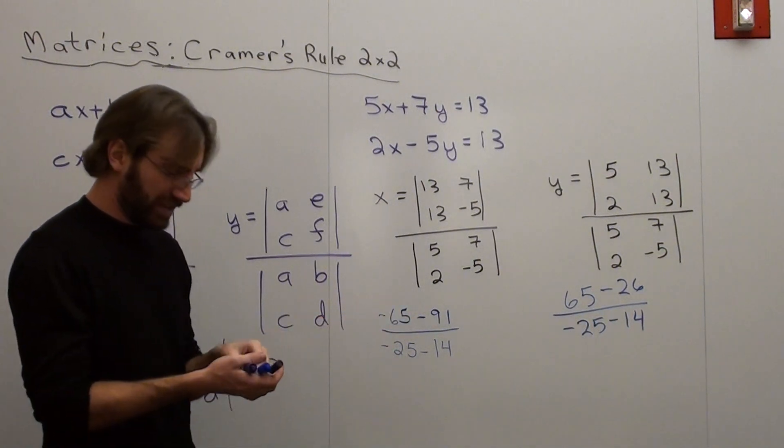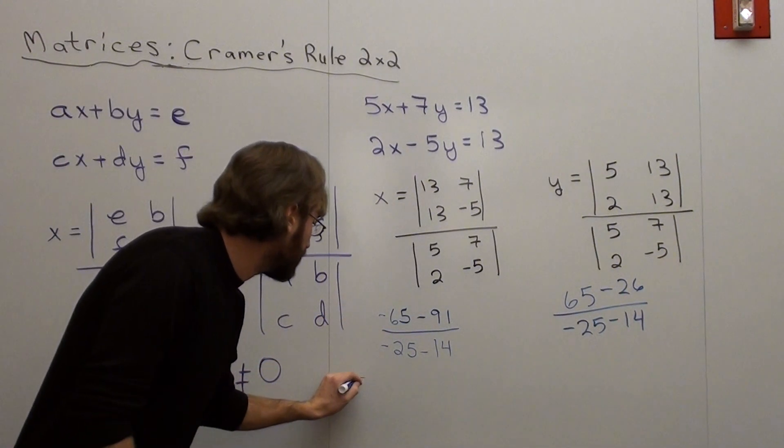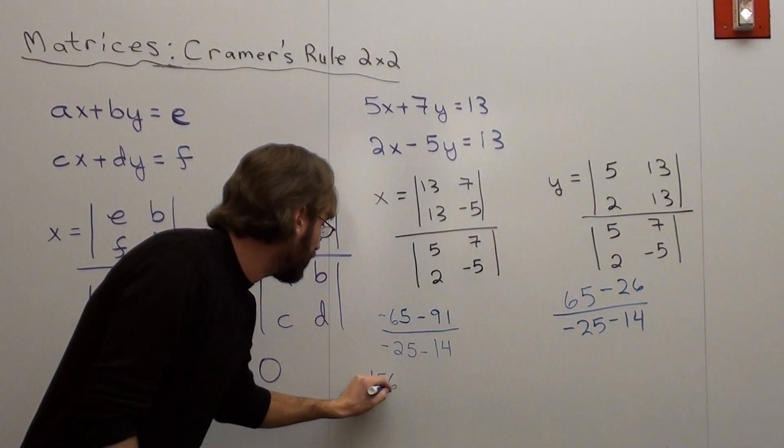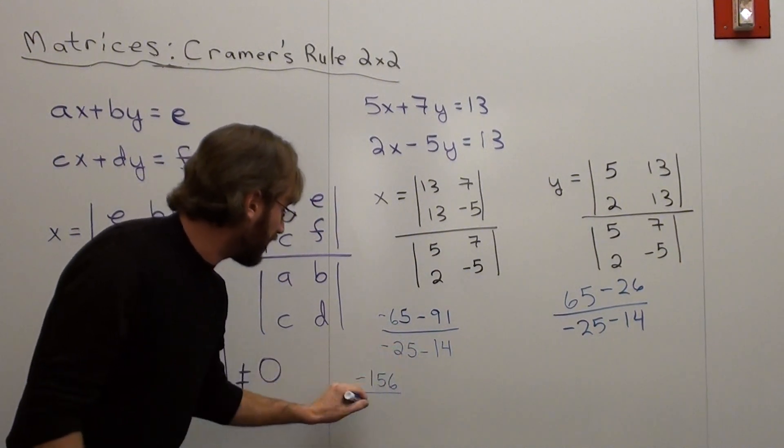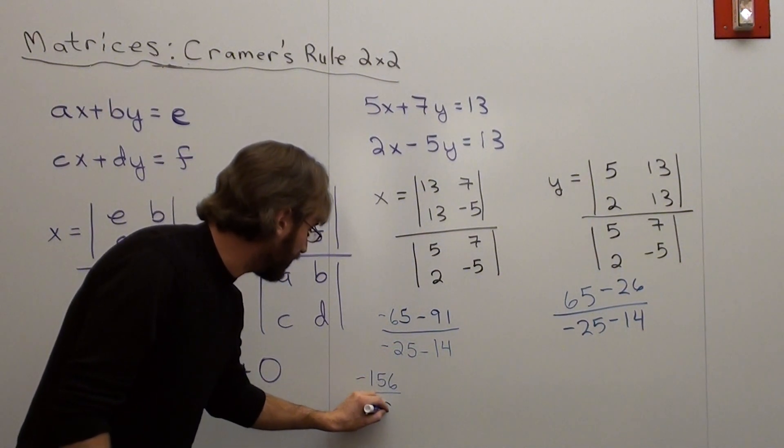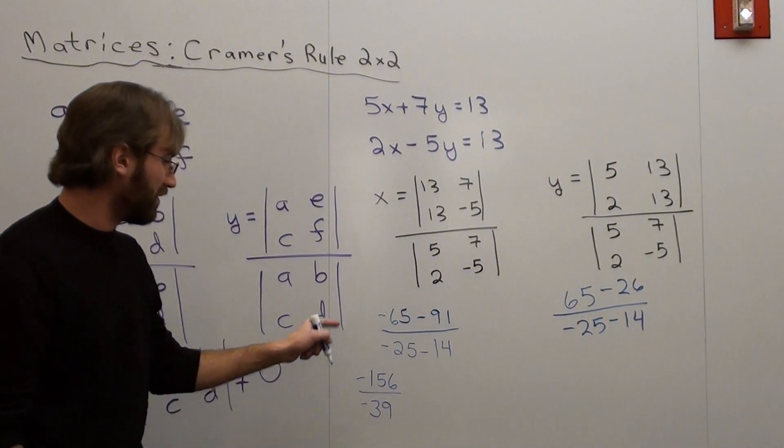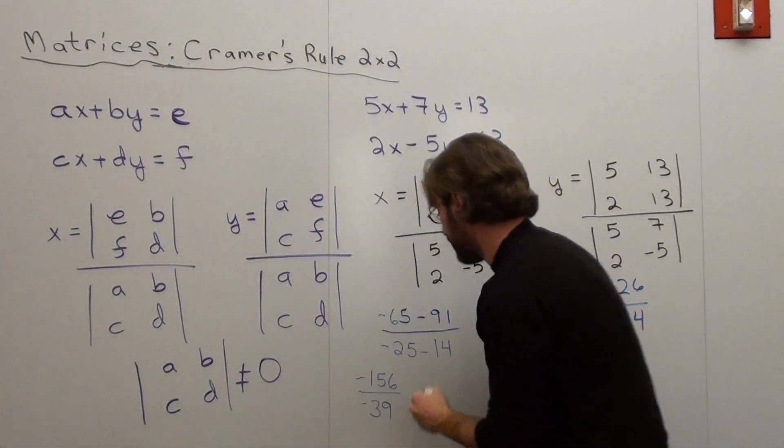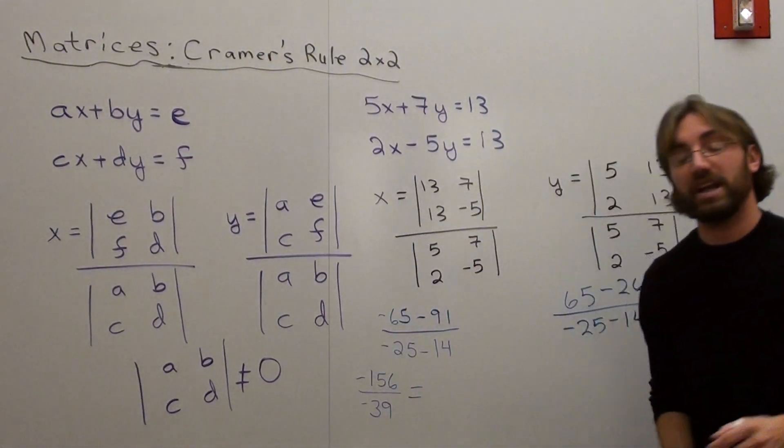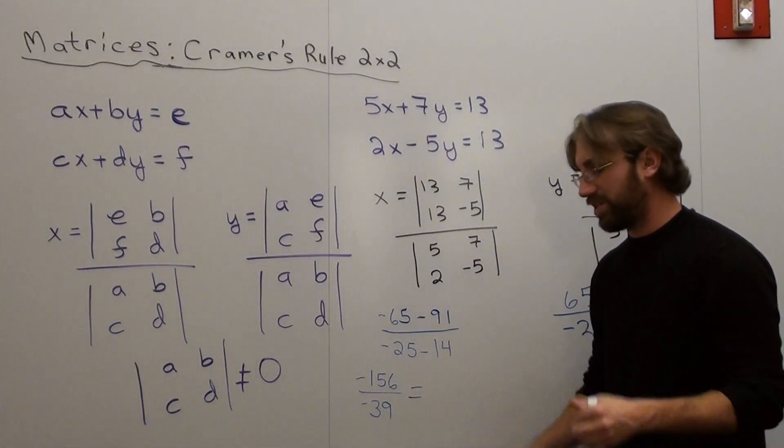That's negative 156 over negative 39. Yes! Negative divided by negative is positive. 156 divided by 39 is 4.